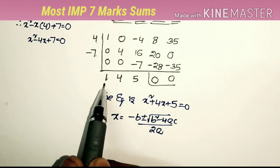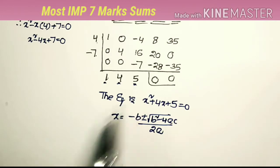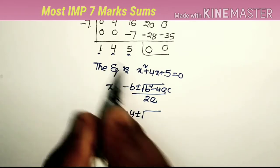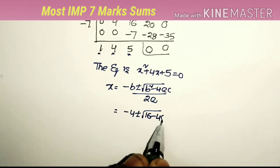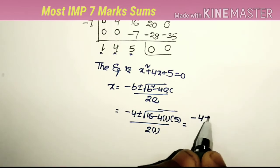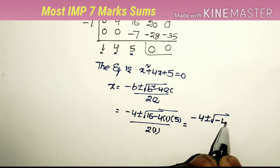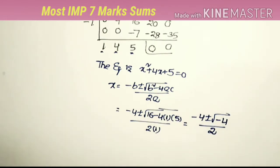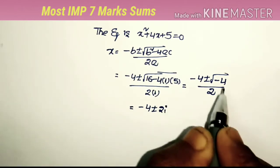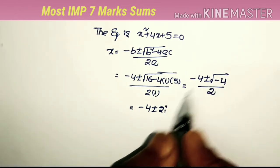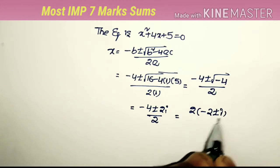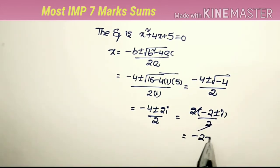Substituting a=1, b=4, c=5 into the formula: x = (-4 ± √(16 - 20)) / 2 = (-4 ± √(-4)) / 2 = (-4 ± 2i) / 2. Taking 2 common gives (-2 ± i).